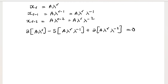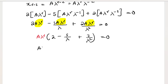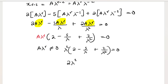Factoring out the common term A·λ^r gives A·λ^r times (2 minus 5/λ plus 2/λ²) equals zero. Since the solution must be non-trivial, A·λ^r must not equal zero, so 2 minus 5/λ plus 2/λ² must equal zero.